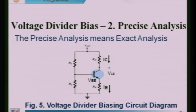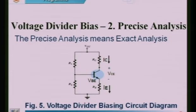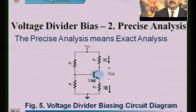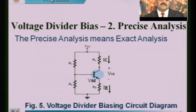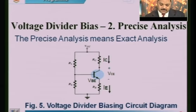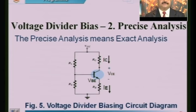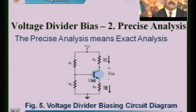So far we discussed voltage divider biasing approximate analysis. Now let us discuss the second analysis method: precise analysis. Precise analysis means exact analysis. In the approximate method we neglected IB, treating it as zero. In the exact method we consider IB as well, which is why beta comes into the picture.